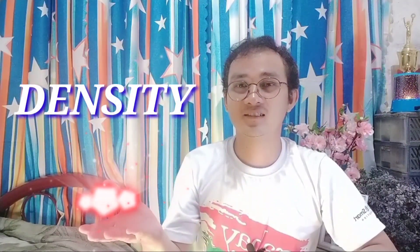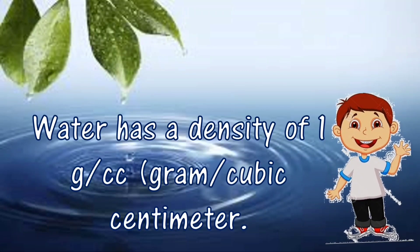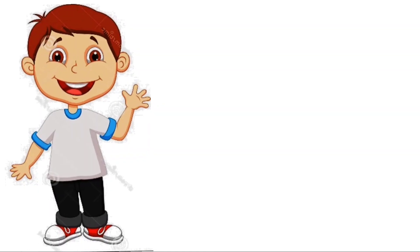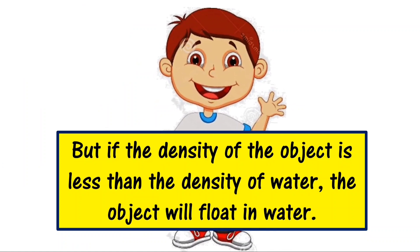The ability of materials to sink or float in the water depends on their density. Density is the amount of mass of an object per unit volume. Water has a density of 1 gram per cubic centimeter. If the density of an object is higher than the density of water, the object will sink in water. But if the density of the object is less than the density of water, the object will float in water.